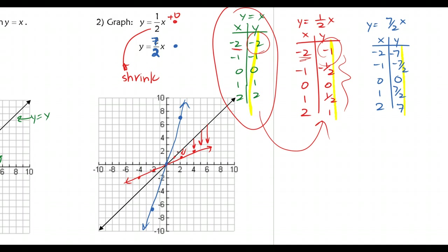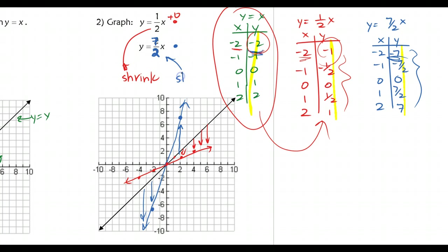Everything on the line is getting smaller as far as the y-value, so this is a shrink. In the blue line, all of these table values are getting larger — it jumps from negative two all the way up to negative seven. These values have stretched; they've gone up and stretched, and you're getting a much steeper graph. So this is a stretch. Notice: the slope coefficient here is less than one for the shrink, and larger than one for the stretch.